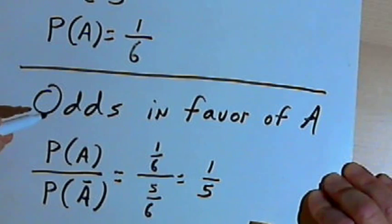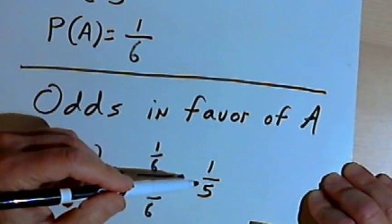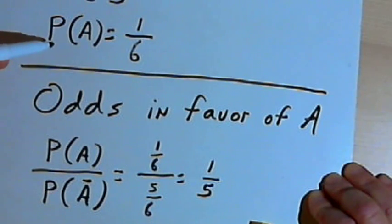So the odds in favor of A, the odds in favor of rolling a 4, are 1 over 5, or we could read this as 1 to 5. That's different than the probability of A, which was 1 over 6.